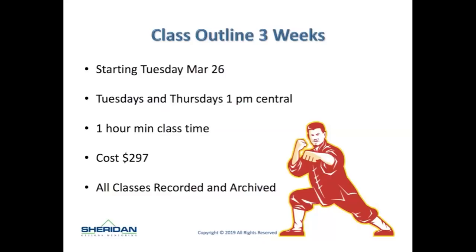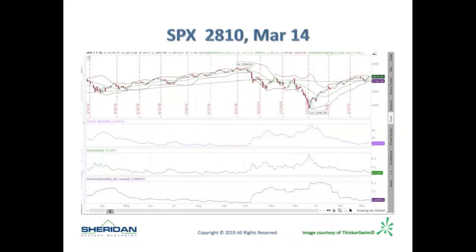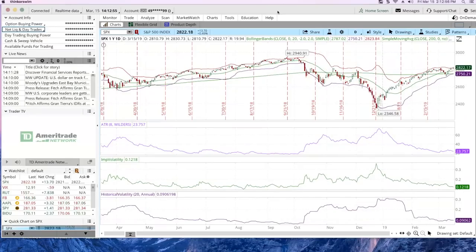Today we'll talk about both. This slide was done yesterday — SPX at 2810. Let's go right into thinkorswim. Most of you are pretty familiar with the thinkorswim or TD Ameritrade platform. Right now as we speak, SPX is at 2822, up 13.